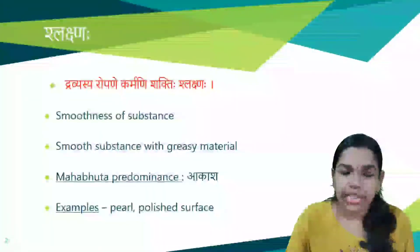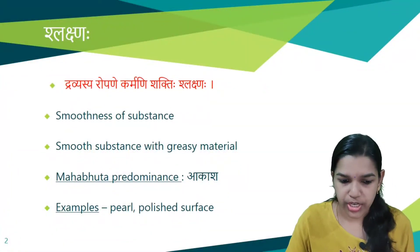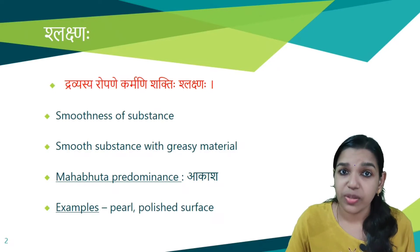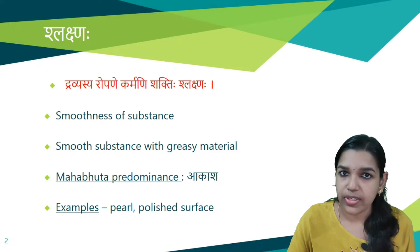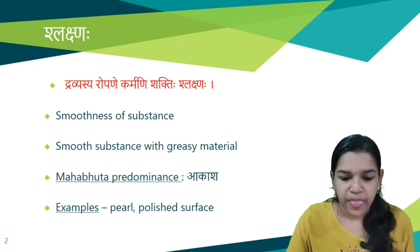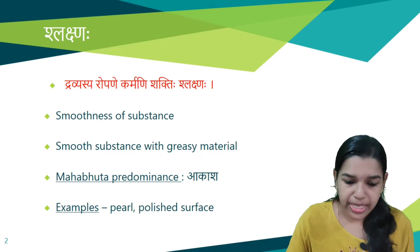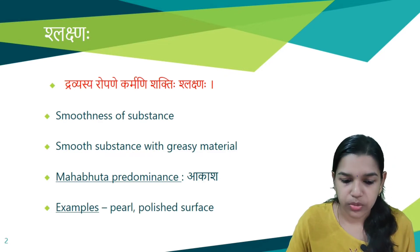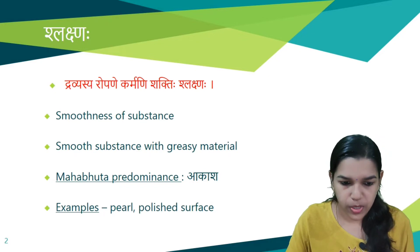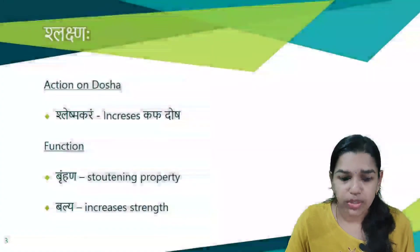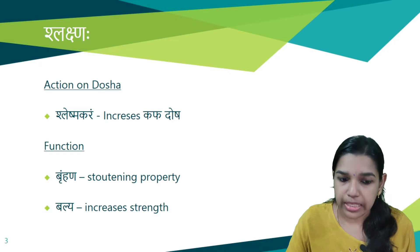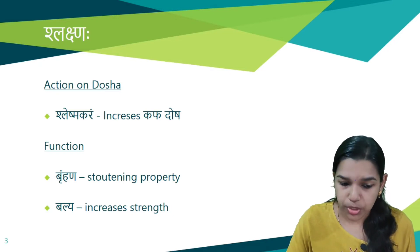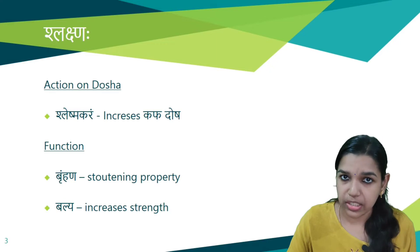Next is the Shlakshna guna. Dravyasya ropane karmani shakti hi shlakshnah. That is, the smoothness of a substance is contributed by the Shlakshna guna. Smooth substances with greasy material are considered Shlakshna. Akasha is the predominant Mahabhuta. Examples include pearl, polished surfaces, etc. The actions of Shlakshna guna dravyas are Shleshma kara, that is it increases kapha dosha, brimmana which is the stoutening property, and balya which increases strength.